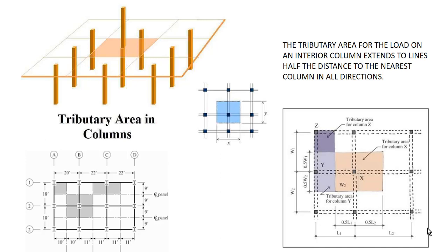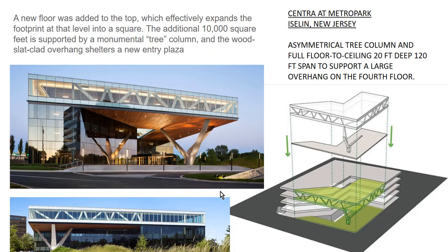I have a few simple calculations we may look at towards the end of the semester. Let's take a look at some case studies — this one's pretty interesting. They added a new floor on top of an existing building, and 10,000 square feet is supported by this monumental tree column. It's a unique column with three points that pull in and work with those calculations to pick up the load. The ceiling of the plaza is all wood slat-clad, which is pretty impressive and shelters this new plaza. It's in New Jersey — an asymmetrical tree column with a full floor-to-ceiling 20-foot depth and 120-foot span to support the large overhang on that fourth floor.